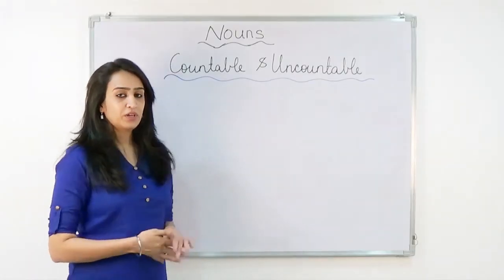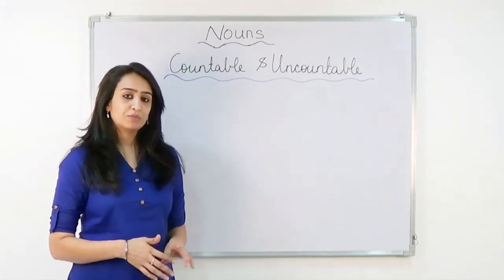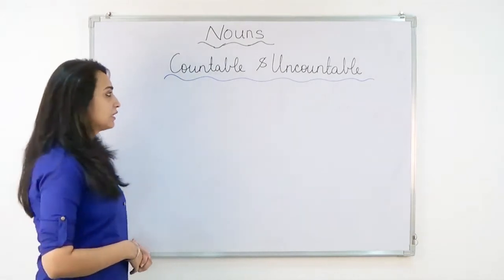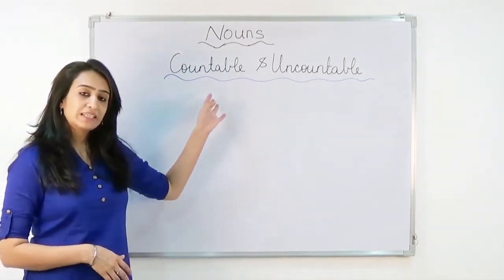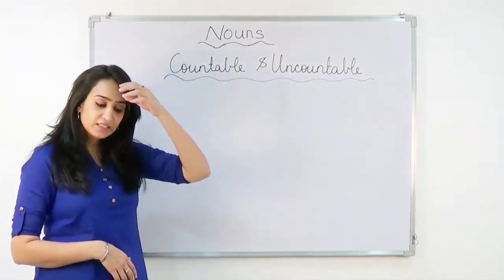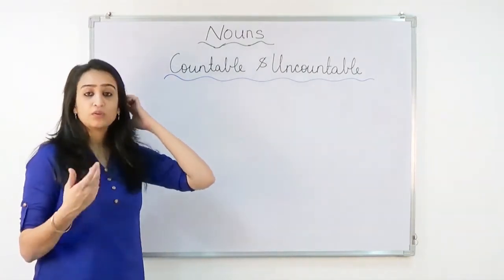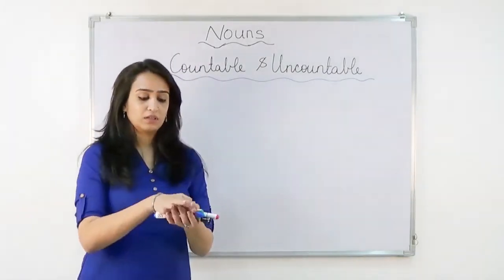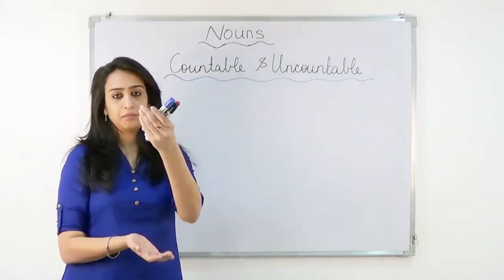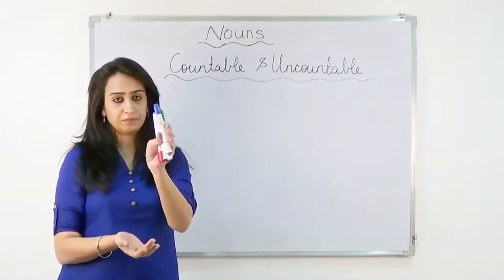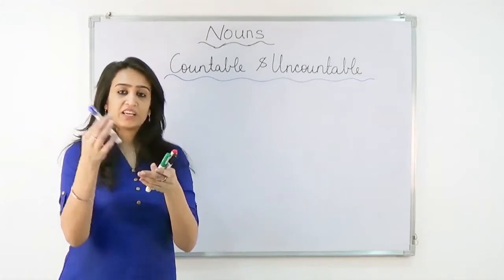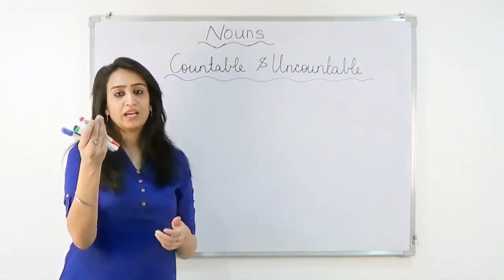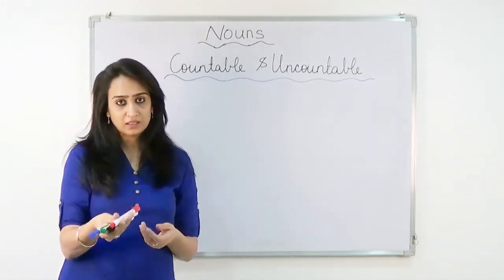Now we are going to learn about countable and uncountable nouns. Countable, as the name suggests, we can count them. For example, pens — we can count 1, 2, 3, 4 and it's done.